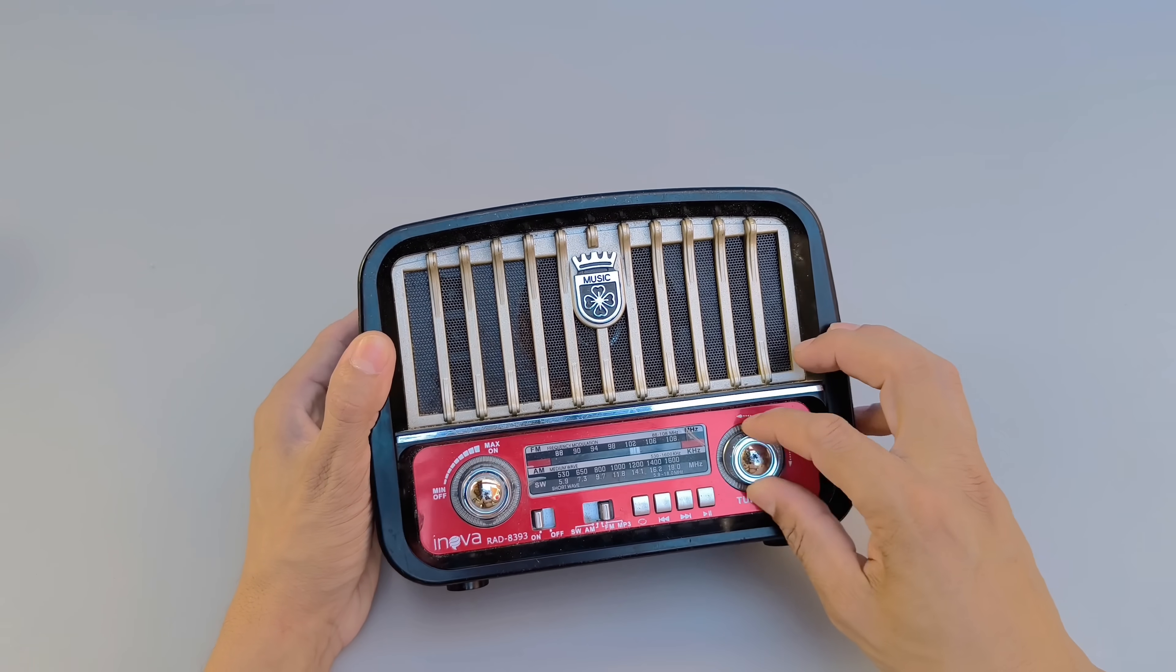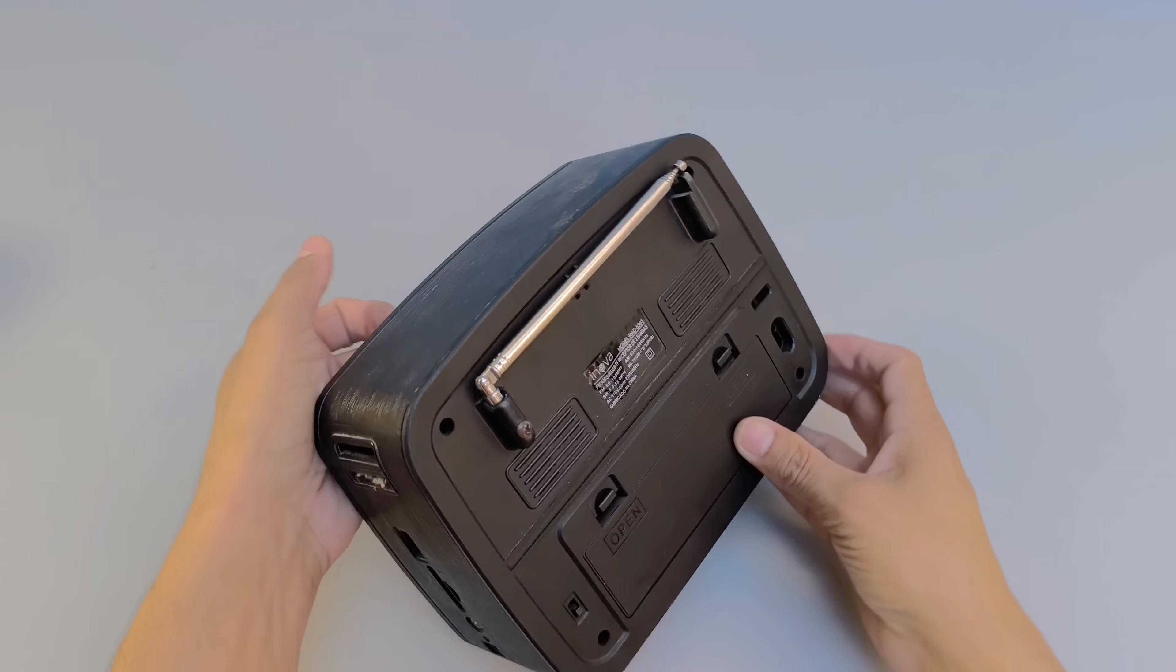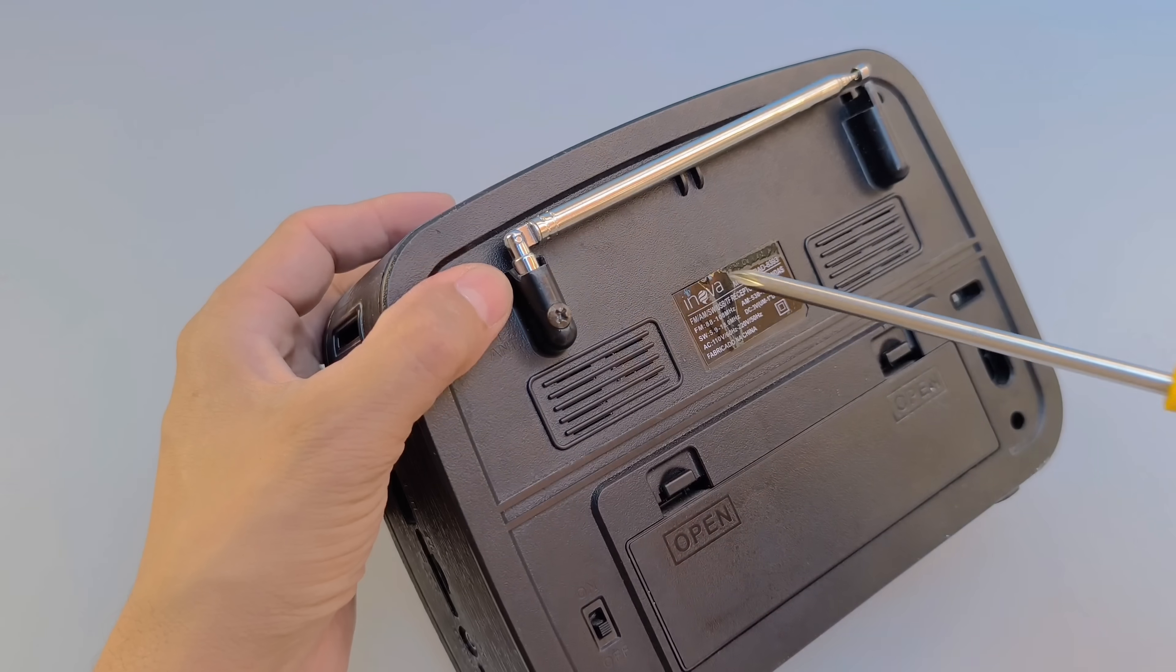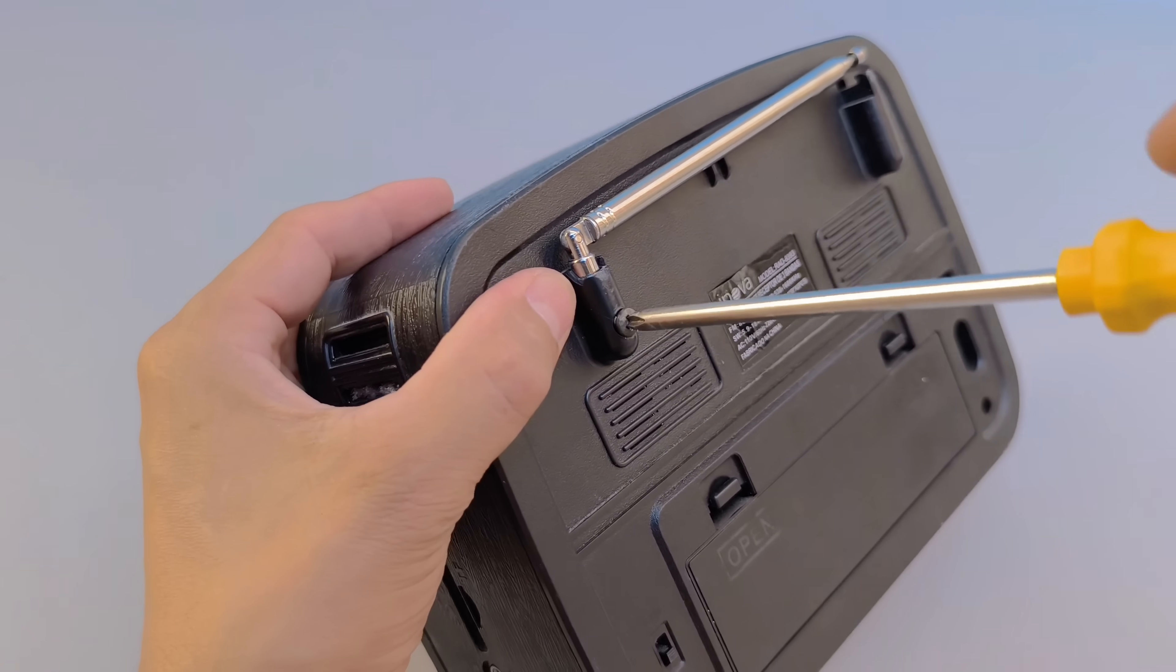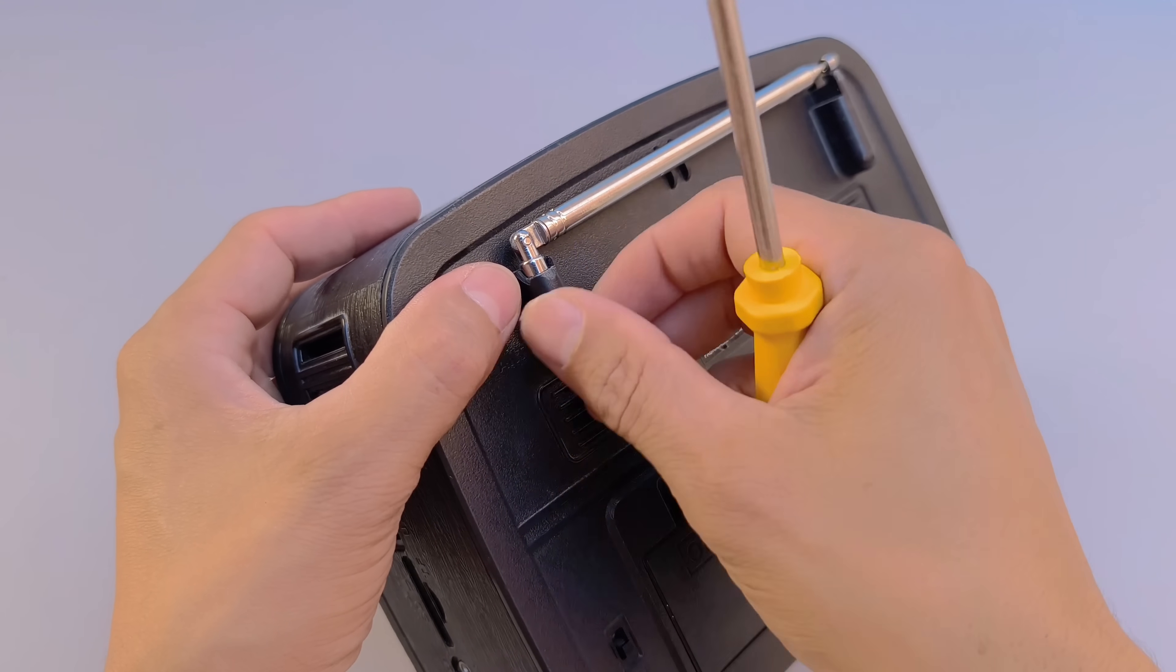To continue assembling our invention, we will use a telescopic antenna, one of those common on portable radios. The first step is to carefully remove it from the radio, simply by unscrewing the metal base that holds the antenna, ensuring that no part is damaged during this initial process.